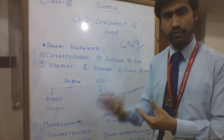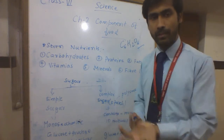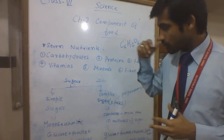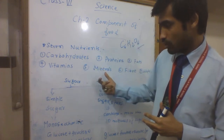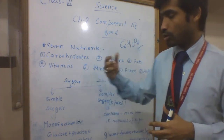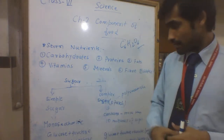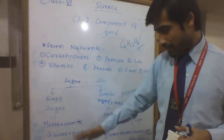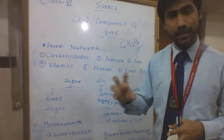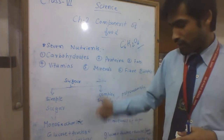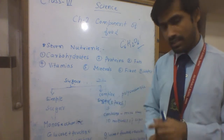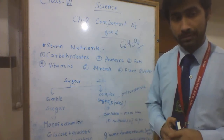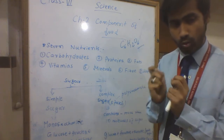When a plant prepares food by photosynthesis, the food is prepared in the form of sugar, and the sugar is stored in the form of starch. So carbohydrates are basically known as sugar, in the form of glucose. Sugar is of two types: simple sugar and complex sugar. Simple sugar — monosaccharides — contains only one molecule of sugar. Complex sugar contains more than ten molecules of sugar, which is why it is called complex.